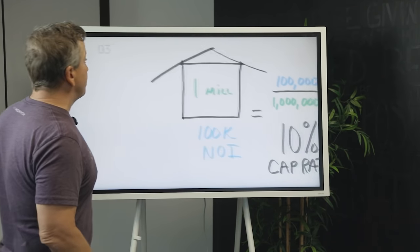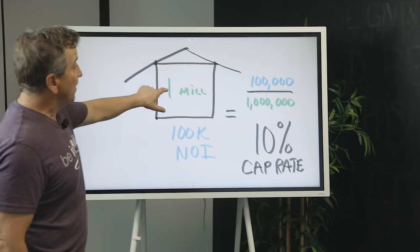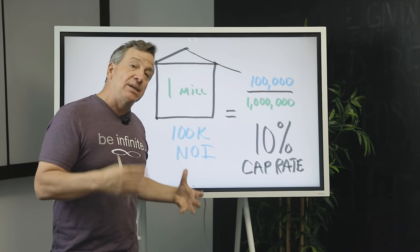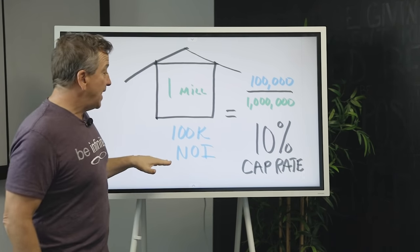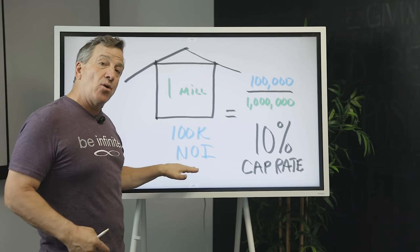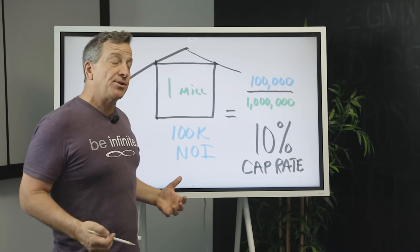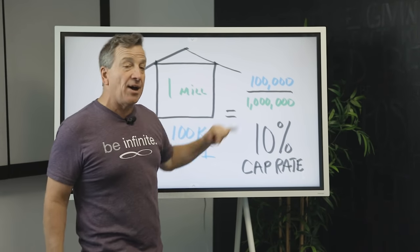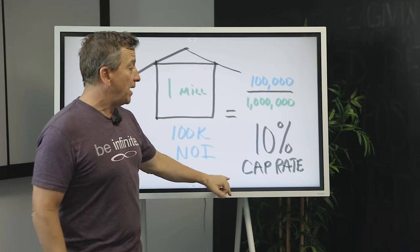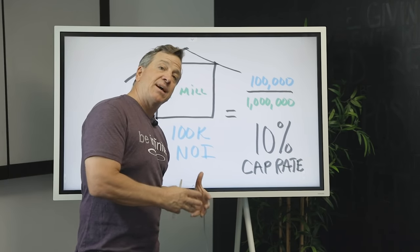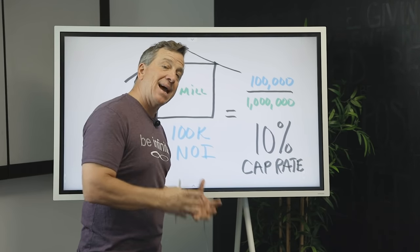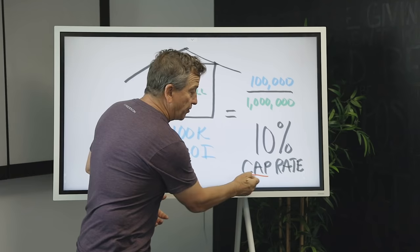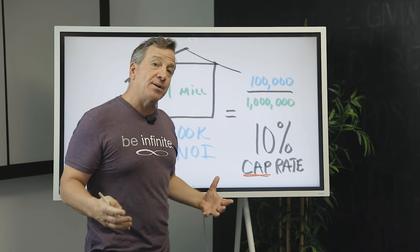So here is a building that we paid, let's say, one million dollars for and has a net operating income, an NOI, of $100,000. So if you take the $100,000 NOI and you divide it by the one million that you paid, then you've paid what's called a 10% cap rate or capitalization rate. That's how it works.